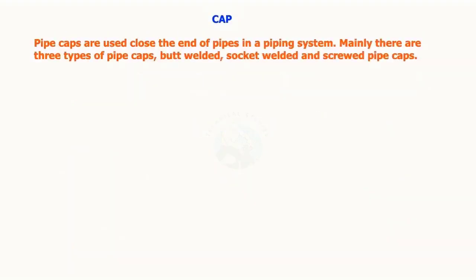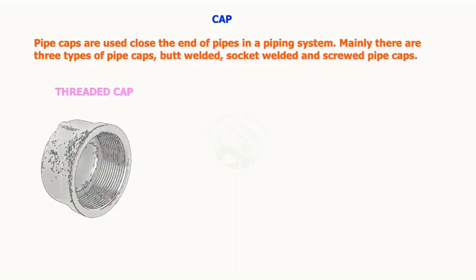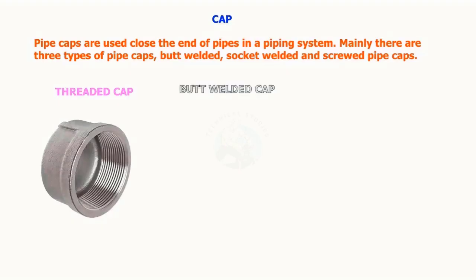Pipe caps are used to close the end of pipes in a piping system. Mainly there are three types of pipe caps: butt welded, socket welded, and screwed pipe caps.